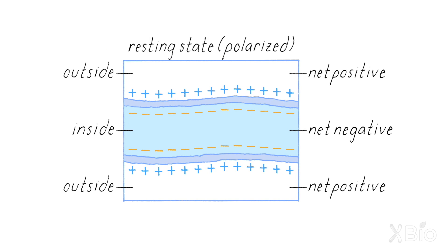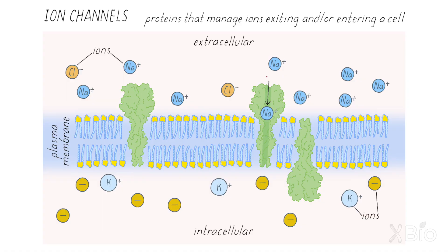The inside of the cell is negatively charged and the outside is positively charged. That state is known as polarized, because you have a positive pole on the outside and a negative pole on the inside. The cell can then use this electric potential across the membrane to generate an electrical signal by discharging that charge. All the cell has to do is open a channel in its membrane that allows positive ions to move from outside to inside, which neutralizes the charge across the membrane.